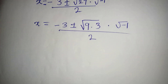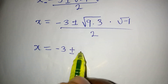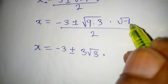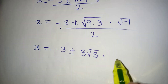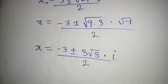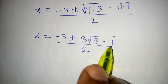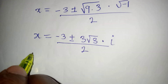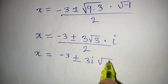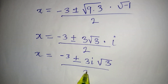Continuing, x equals negative 3 plus or minus — the square root of 9 is 3, then square root of 3, then multiplied by square root of negative 1, which gives the imaginary unit i — all over 2. We can rearrange this so that x is equal to negative 3 plus or minus 3i square root of 3, where the i multiplies the 3, giving 3i. This is all over 2.